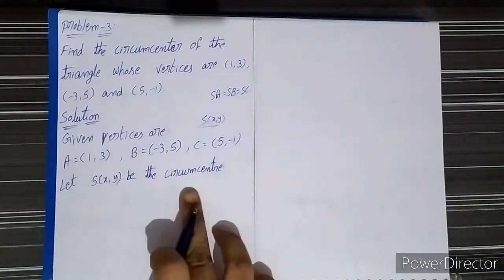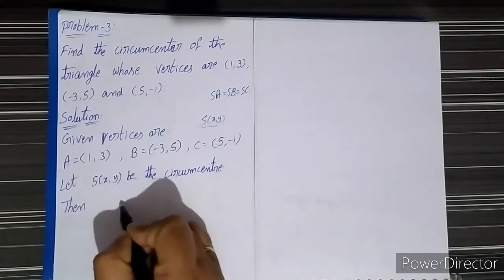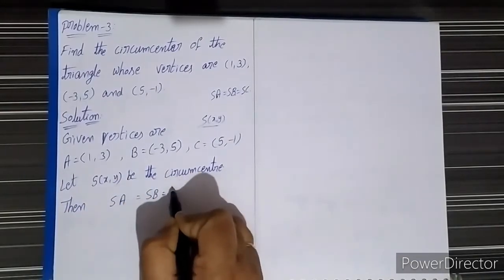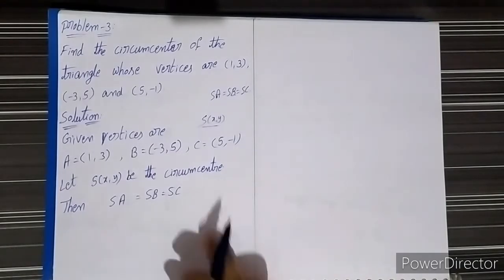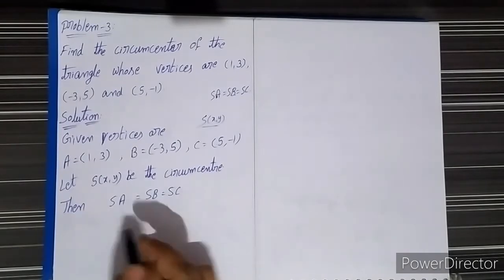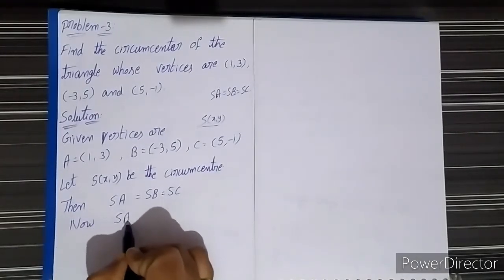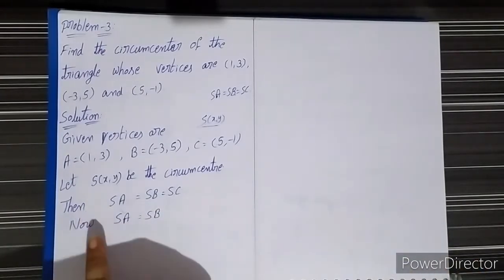Then we know that SA equal to SB equal to SC. This is the known statement. By using this statement we can solve for the circumcenter. First, we equate the two: we take SA equal to SB.